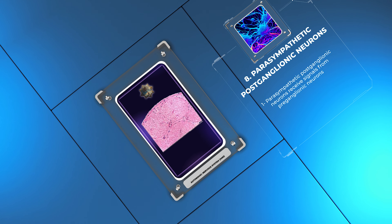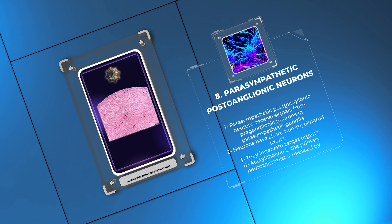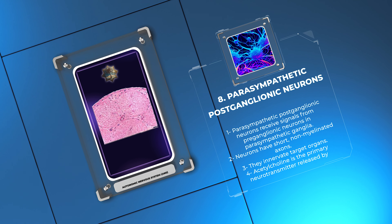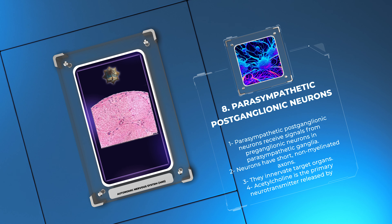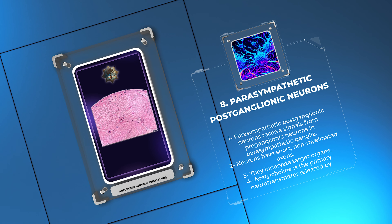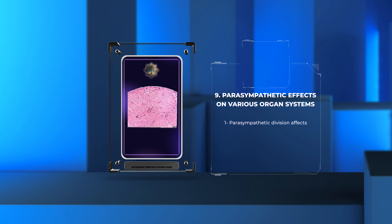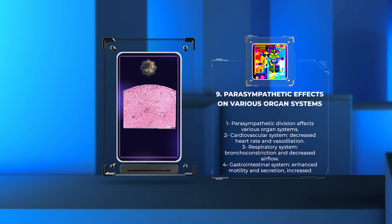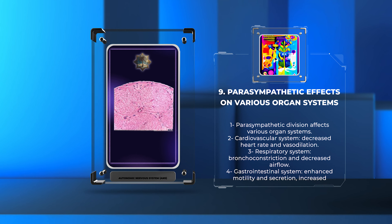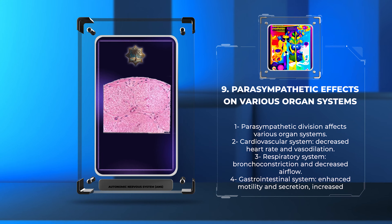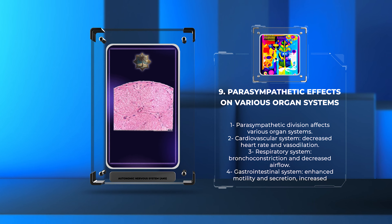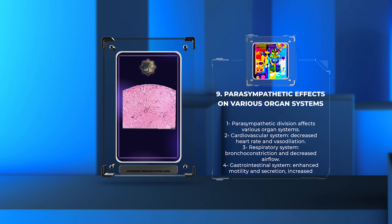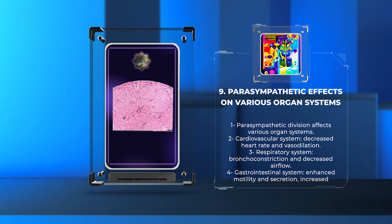Parasympathetic postganglionic neurons receive signals from preganglionic neurons in parasympathetic ganglia. These neurons have short, non-myelinated axons that innervate target organs. Acetylcholine is the primary neurotransmitter released by parasympathetic postganglionic neurons, mediating the transmission of parasympathetic signals. In the cardiovascular system, parasympathetic stimulation leads to decreased heart rate and vasodilation. The respiratory system experiences bronchoconstriction and decreased airflow under parasympathetic influence. Parasympathetic activation also enhances gastrointestinal motility and secretion, while promoting mucus production and bladder contraction.